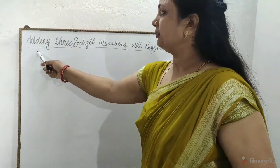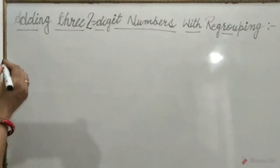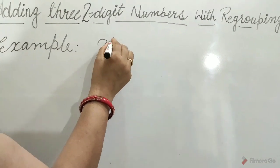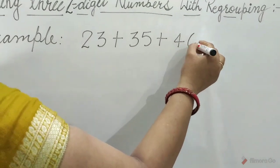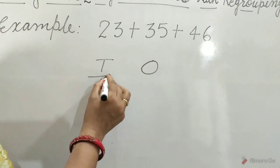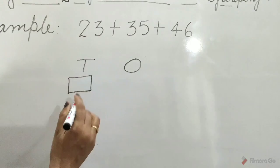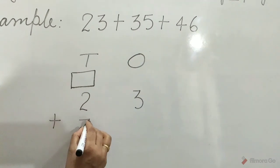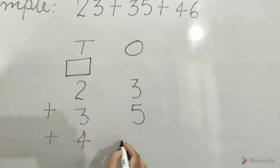Now, adding 3 two-digit numbers with regrouping. Example: 23 plus 35 plus 46. Now write here tens and ones. Draw carry house and write 2 tens, 3 ones plus 3 tens, 5 ones plus 4 tens, 6 ones.